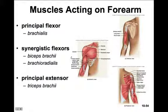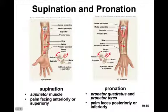The triceps brachii is in the posterior compartment of the arm and involves three heads: the lateral head, the long head, and the medial head — hence the name triceps. The brachialis is the prime mover of elbow flexion and lies just below the biceps brachii. The biceps brachii is the predominant muscle you can palpate in your upper arm and has two heads: a long head and a short head. The brachioradialis goes from the brachium down to the radius. The supinator, pronator teres, and pronator quadratus in the forearm are involved in supination and pronation.